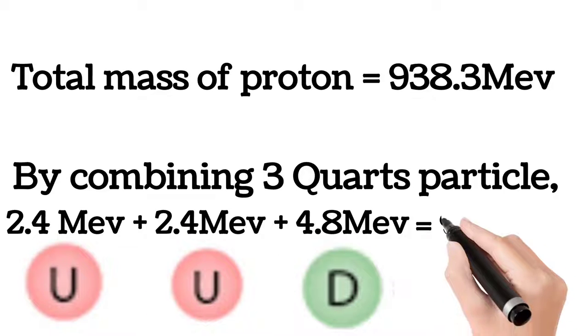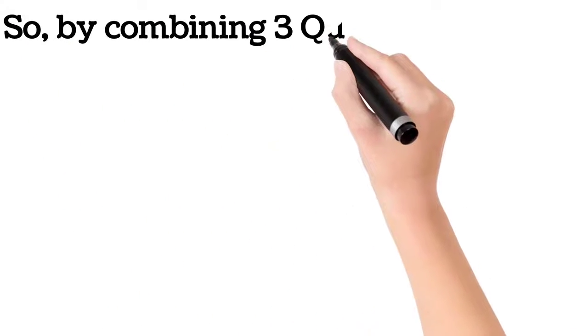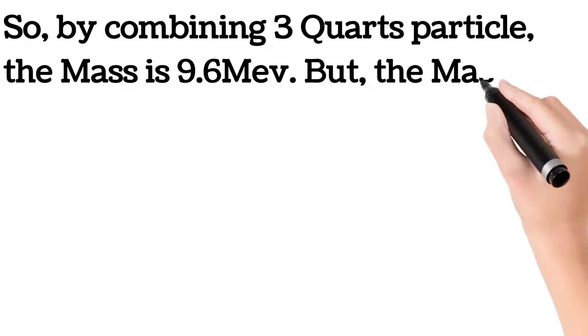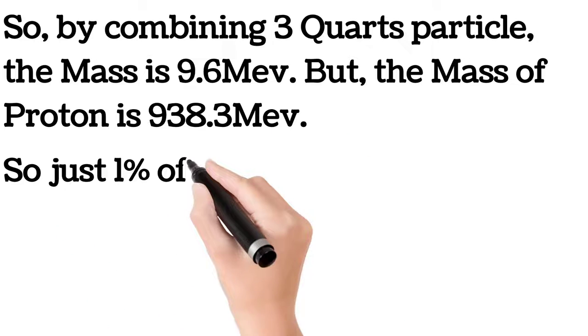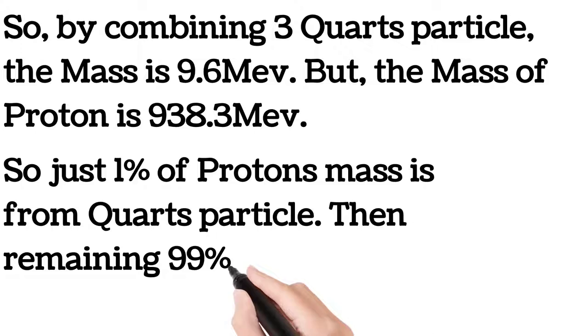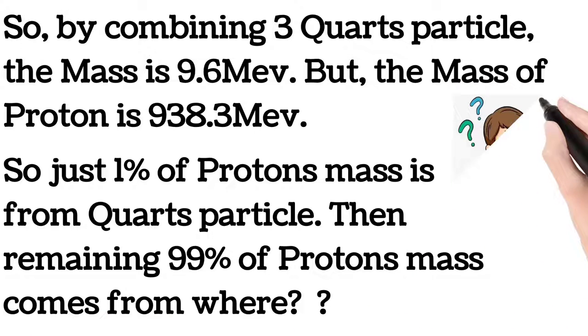So by combining three quark particles, the mass is 9.6 MeV, but a single proton mass is 938.3 MeV. Only 1% of proton mass comes from the three quark particles. The remaining 99% of proton mass comes from elsewhere.